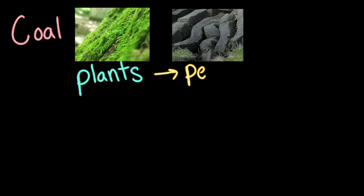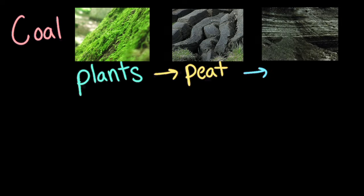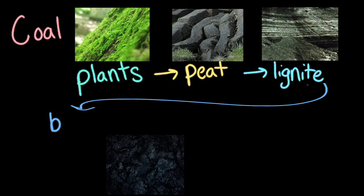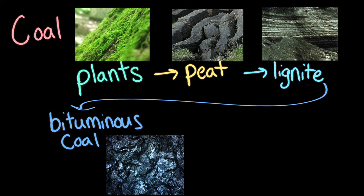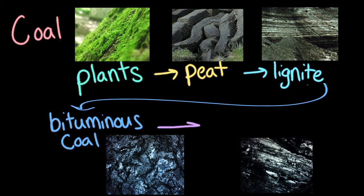Over thousands of years, plant material transforms into a carbon-rich compound called peat, and then, with some pressure, it becomes soft coal, which is called lignite, and then, with more pressure, it becomes bituminous coal, and then finally, it becomes a hard coal, called anthracite.